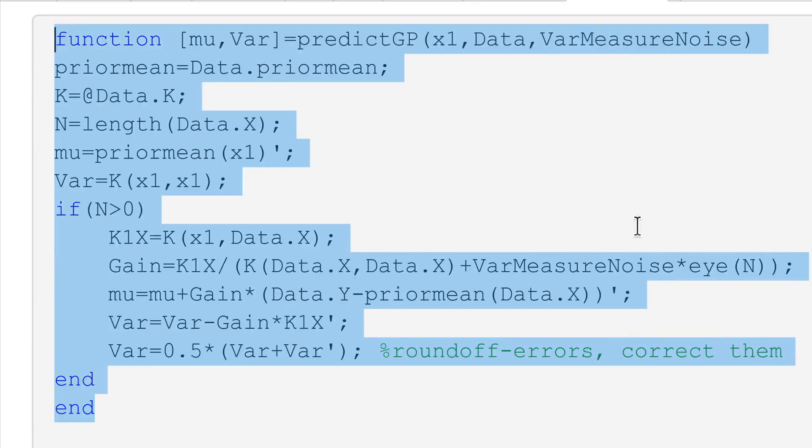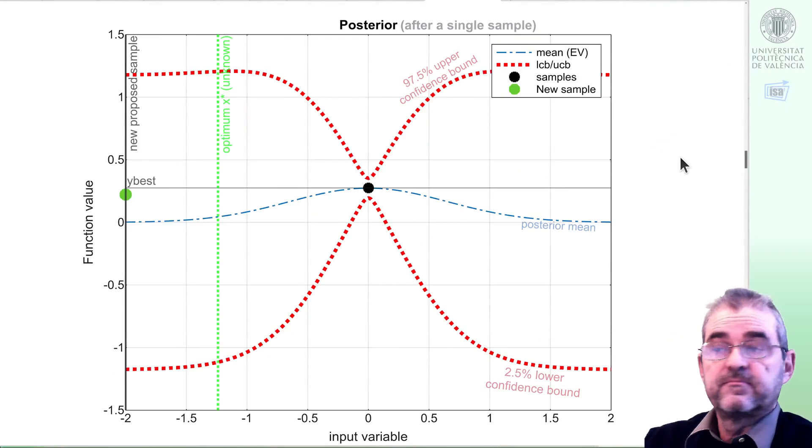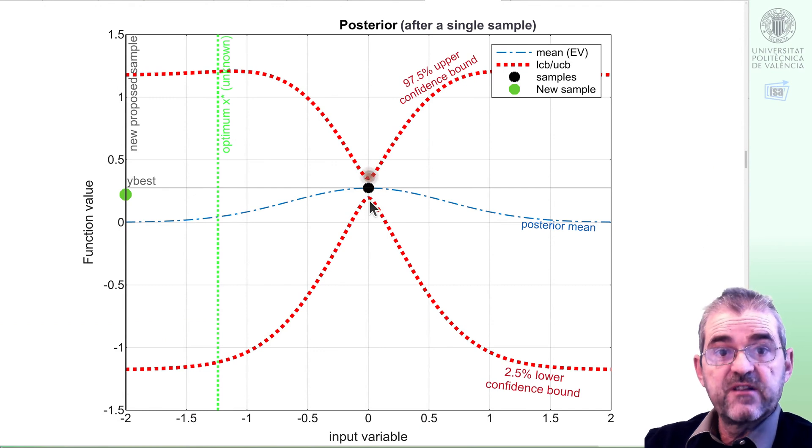So with this code, I carry out that posterior update, Gaussian process regression. I am not delving into it here. Look other videos and materials on the web. The thing is that my updated posterior just shrinks to almost zero variance in the measured point. This residual variance is approximately two standard deviations of the measurement noise.